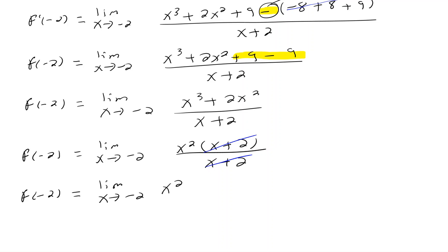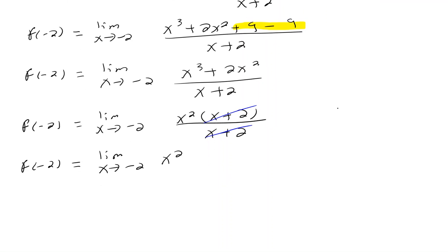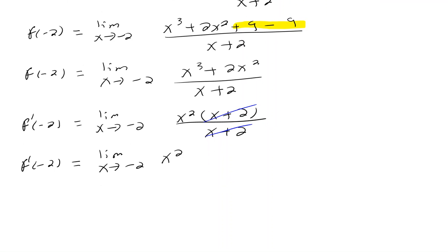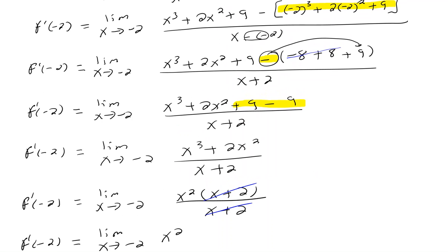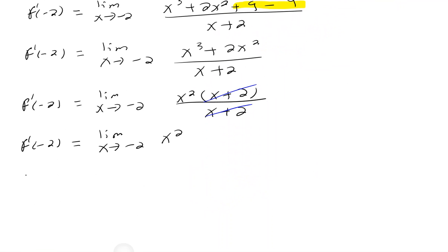So I have the limit of x squared as x approaches negative 2. I'm going to use substitution to find that. So f prime of negative 2 equals — using substitution — I replace x with negative 2, so negative 2 squared. That tells me that my derivative is positive 4.